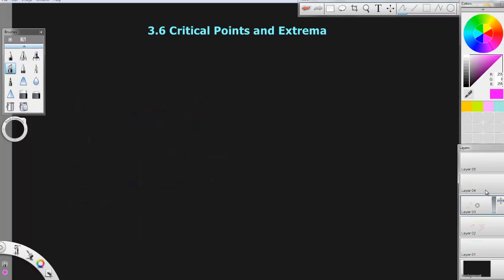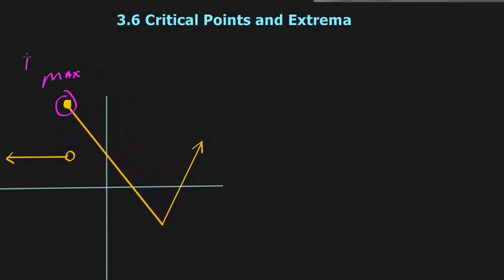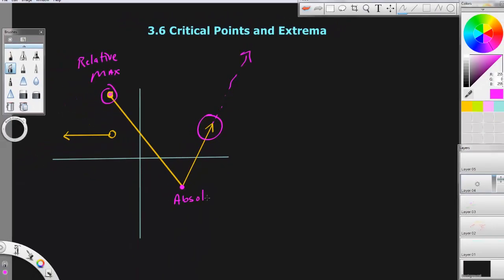Let's look at a very confusing graph. At this point here, even though there are no humps — this would be some kind of absolute value piecewise function — this is still a maximum. Is it relative or absolute? The answer would be a relative maximum, because of this arrowhead. That arrowhead goes up forever, so this would not be the highest point on the graph. But what about this point? This is called an absolute minimum. All of these things are called critical points and extrema of graphs.